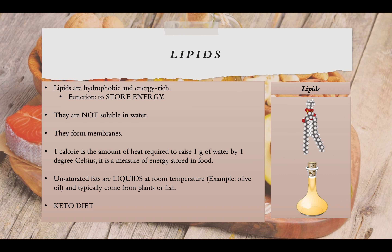Unsaturated fats are liquids at room temperature — for example, olive oil — and they typically come from plants or fish. One gram of fat actually stores more than twice the energy of a gram of carbohydrate, making fatty foods very high in calories. Saturated fats are solids at room temperature — for example, butter — and they typically come from animals. Unsaturated fats are liquids at room temperature, like olive oil, typically from plants or fish.